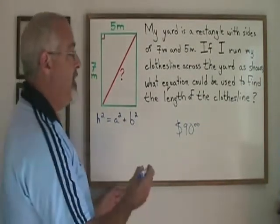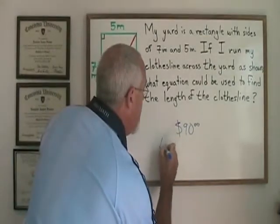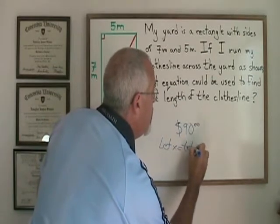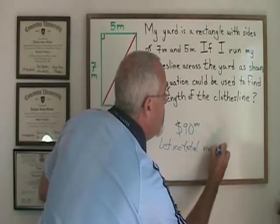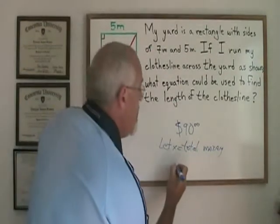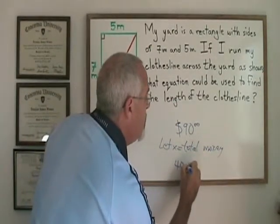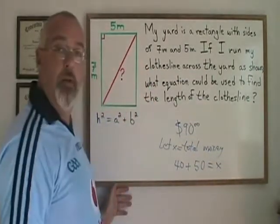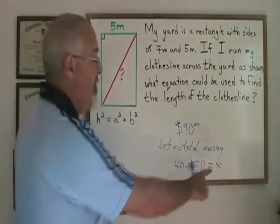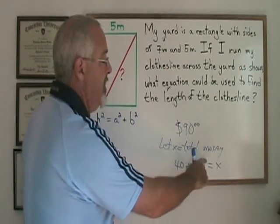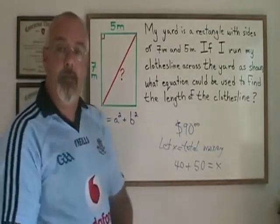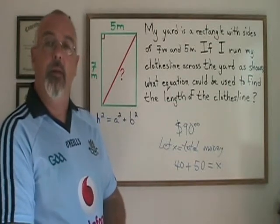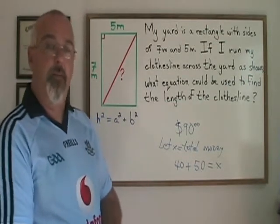What I could do instead to answer that question correctly is say: let x equal the total money that we have together, and $40 plus $50 must equal that total. This is a mathematical equation where my unknown is being made equal to an expression that, if simplified, would give me the exact value I am looking for — the total amount of money that my friend and I have in our pockets.